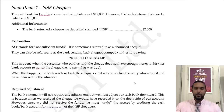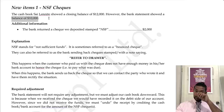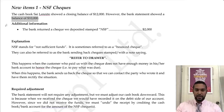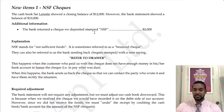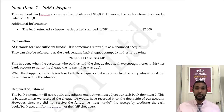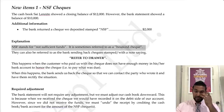Looking at the example: the cash book of Silent Night showed a closing balance of $12,000, but the bank statement showed a balance of $10,000. The bank returned the check we deposited stamped NSF — not sufficient funds — meaning the person who gave you the check, their account doesn't have enough money. The amount was $2,000. The bank statement will not require any adjustment, but we must adjust our cash book downward.